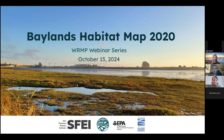Before we get started, we really just wanted to take a moment to acknowledge the vision and support of our EPA colleagues. The EPA's Water Quality Improvement Fund funded the Baylands Habitat Map and the development of the innovative and automated mapping techniques that you'll hear about today. This map serves as the base map for the WRMP and will be used to detect change in our region's habitats.